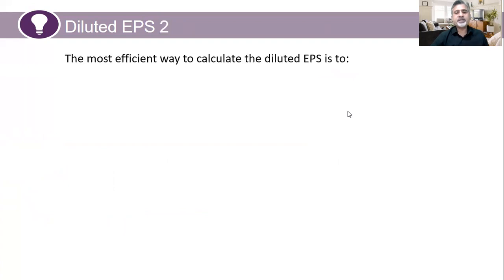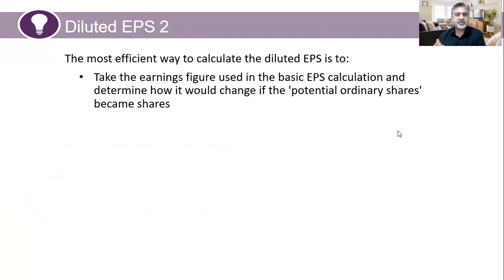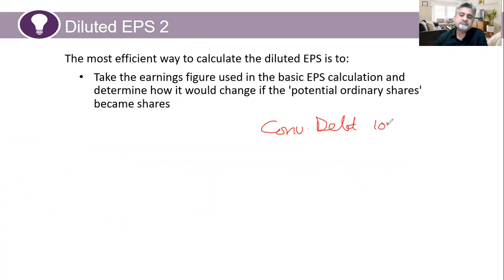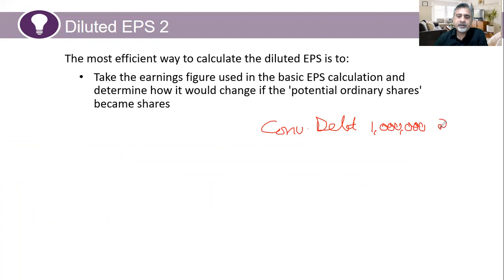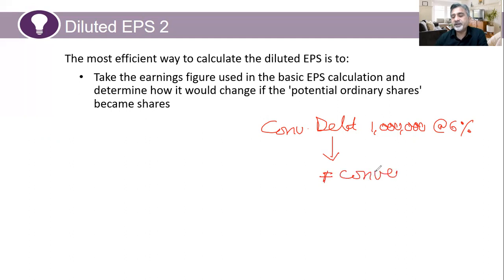The most efficient way to calculate diluted EPS is to take the earnings figure used in the basic EPS calculation and determine how it would change if the potential ordinary shares become actual shares. Earnings will also change. For example, suppose you have a convertible debt of $1 million at 6%, and upon conversion you will issue 50,000 shares.